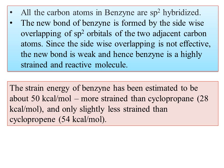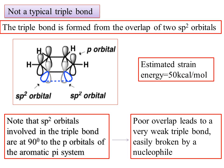Benzyne's strained energy of 50 kcal per mole means this is not a typical triple bond. In a typical triple bond, the bond is formed by the overlapping of two sp2 hybrid orbitals. In benzyne, the sp2 hybrid orbitals overlap sideways, and the sp2 hybrid orbital involved in the triple bond is at 90 degrees to the p orbitals of the aromatic pi system.